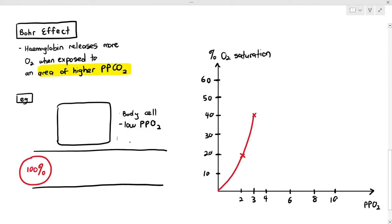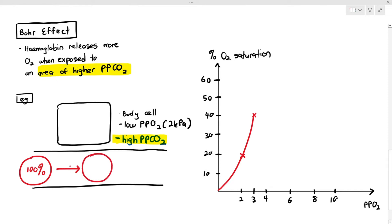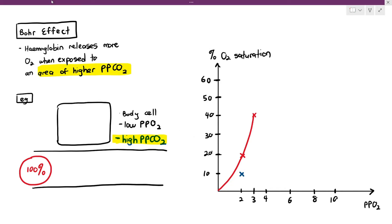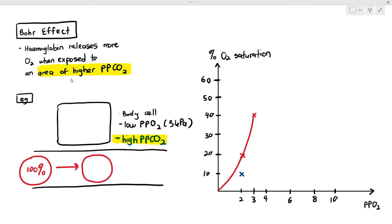Now I'll change the condition: the body cell still has a low partial pressure of oxygen, but now it has a high partial pressure of carbon dioxide. How would hemoglobin behave? If the partial pressure of oxygen is 2 kilopascals, the saturation becomes only 10%, meaning it releases 90% of oxygen as opposed to 80% earlier. At 3 kilopascals of oxygen with high pCO₂, hemoglobin releases 75% of oxygen, leaving a percentage oxygen saturation of only 25%.